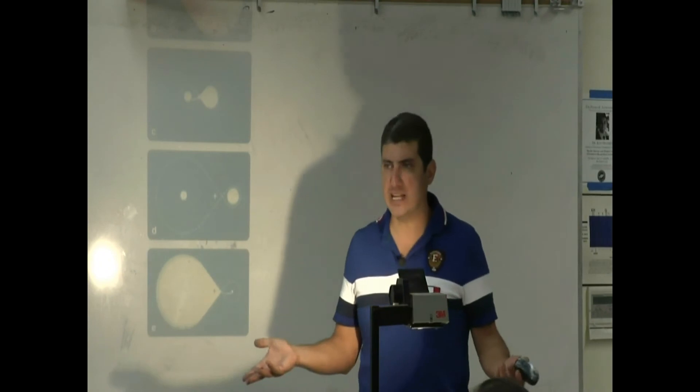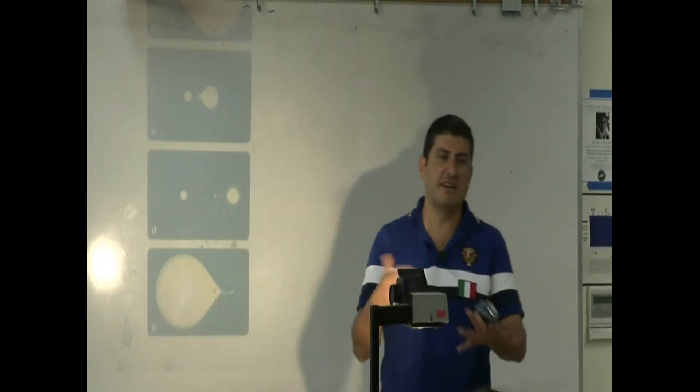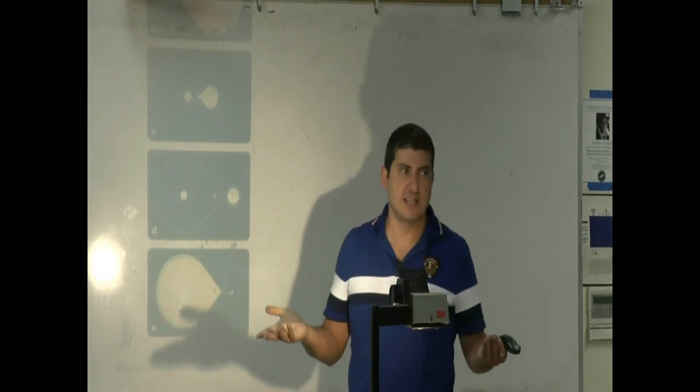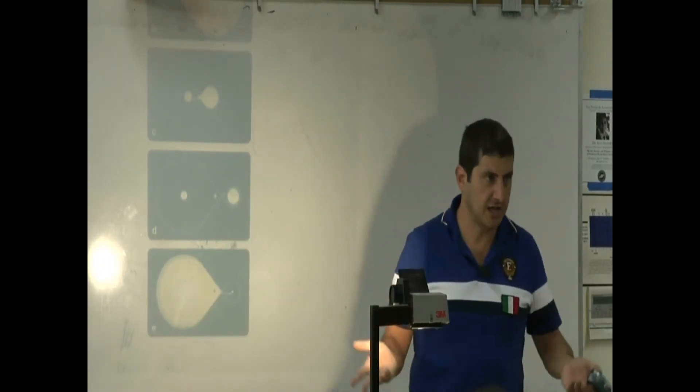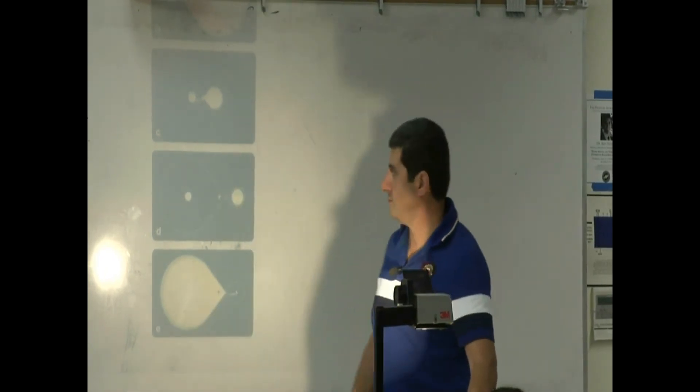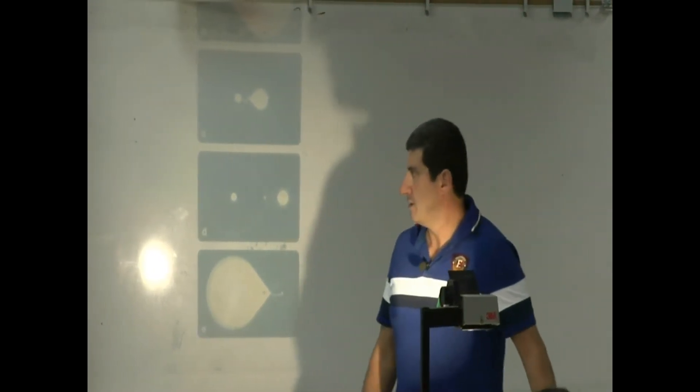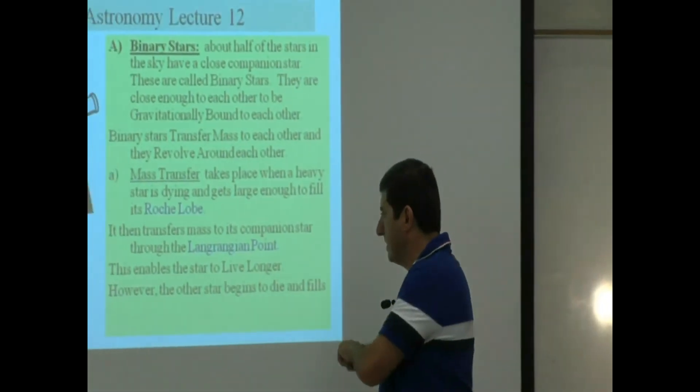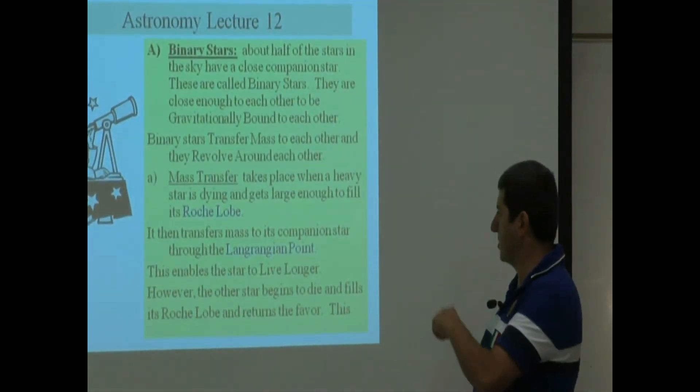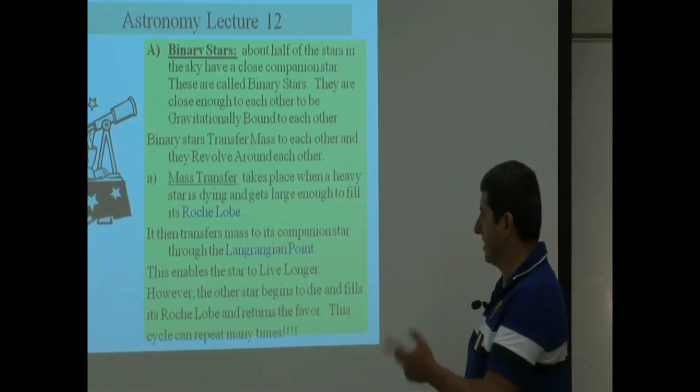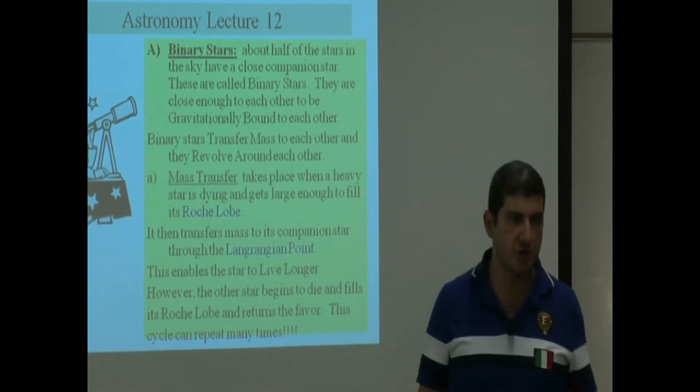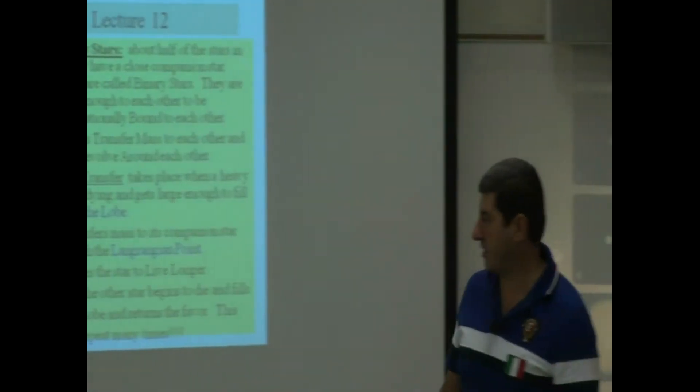Now can this last forever? Can anything good last forever? No. Eventually they each feed each other mass but then there's a limit to that. They're both going to eventually die. This enables the star to live longer. However, the other star begins to die and fills its Roche lobe and returns the favor. This cycle can repeat many times until eventually they can't do that anymore and they run out of energy and then they die. Both, they both die.